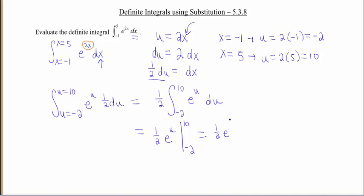So we have 1/2 e to the 10th, minus 1/2 e to the negative 2. It's kind of ugly, because they're e's, and I'm not gonna change these to decimals, so I'm just leaving them as e's.